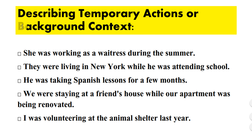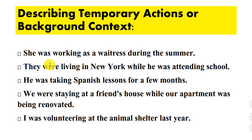The past progressive tense is used for describing temporary actions or background context. For example: 'She was working as a waitress during the summer.' 'They were living in New York.' 'While he was attending school, he was taking Spanish lessons for a few months.'